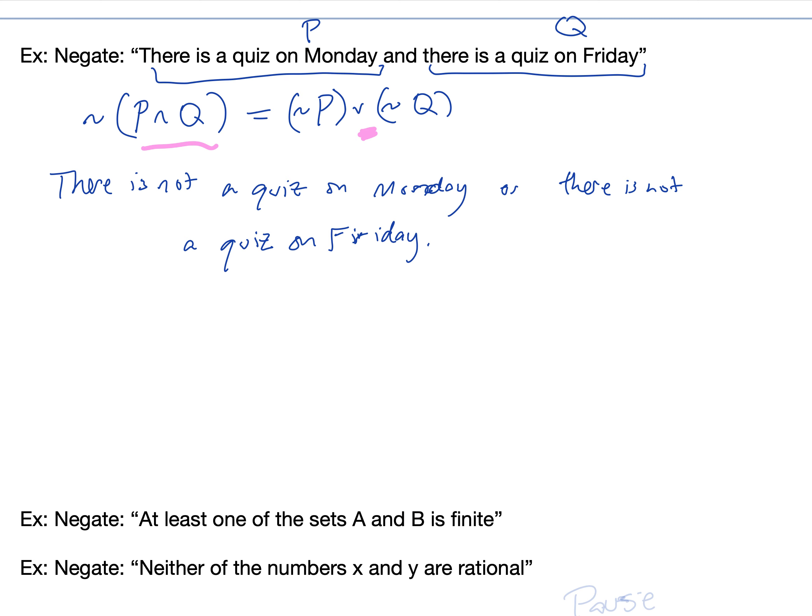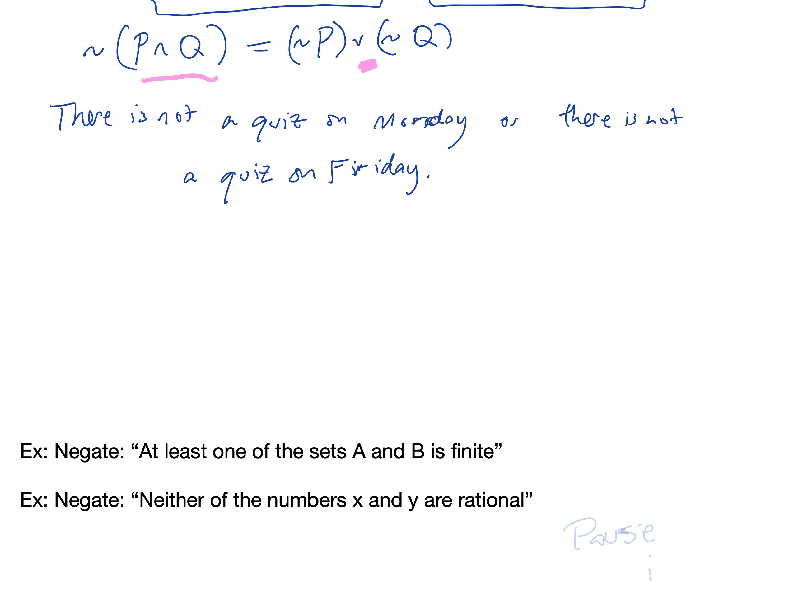Now try these two. Negate the open sentence: 'at least one of the sets A and B is finite.' Also negate the open sentence: 'neither of the numbers x and y are rational.' Pause and try each of those out.